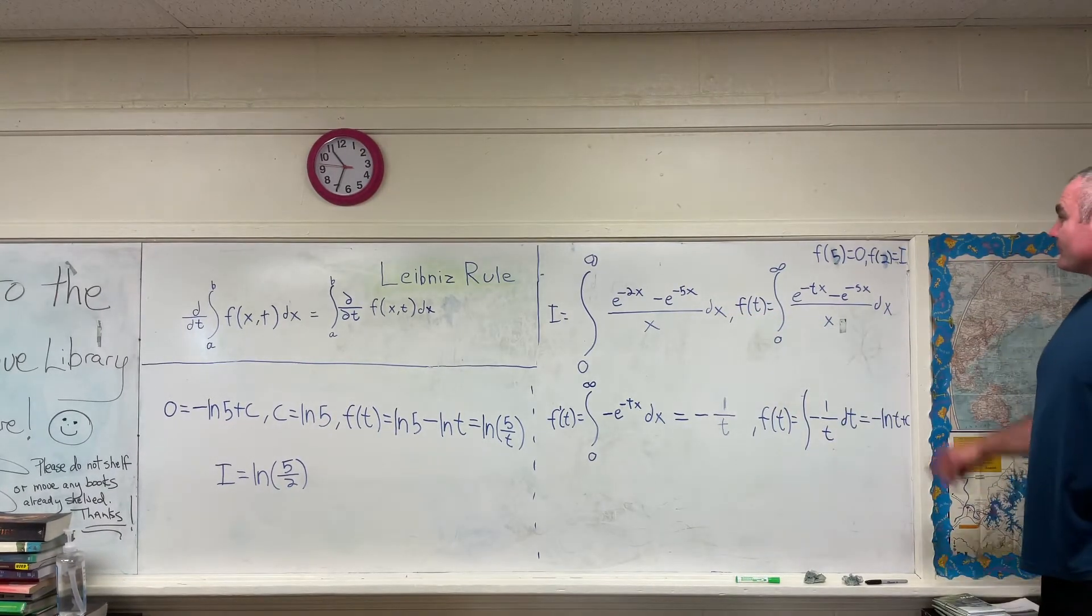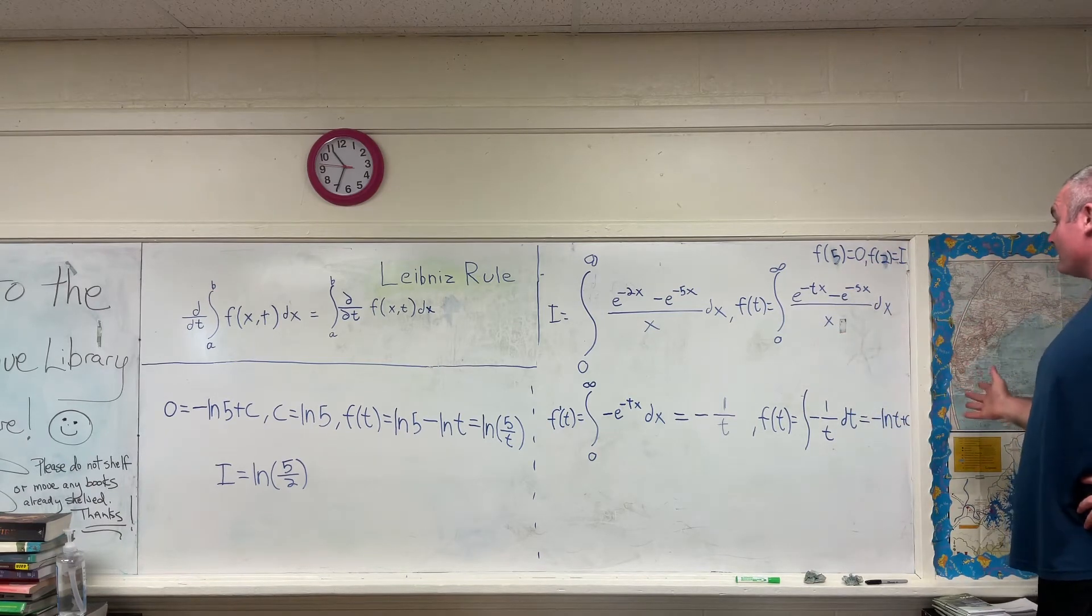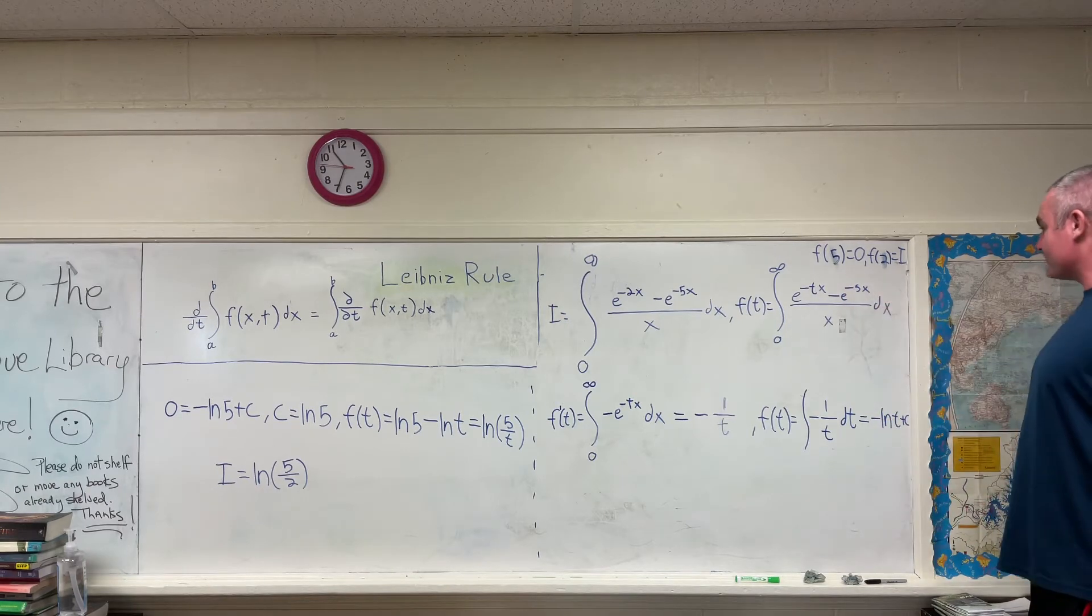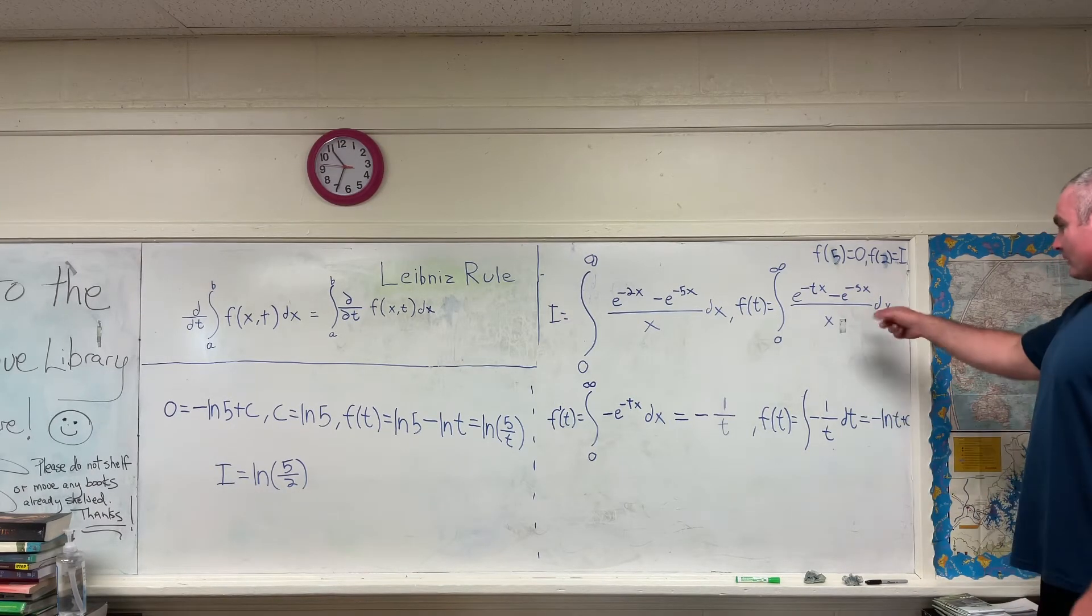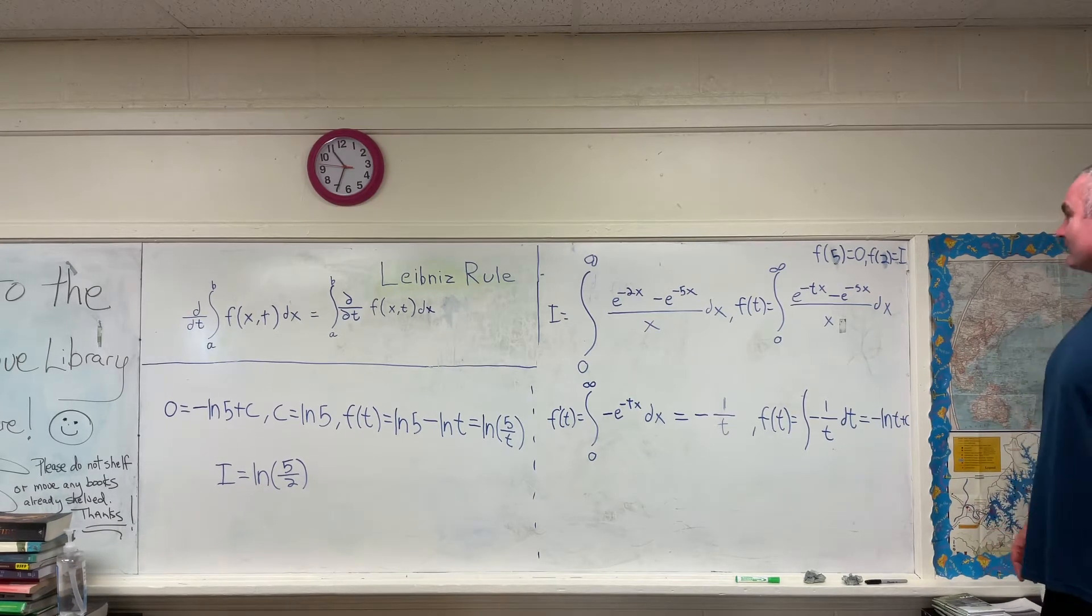Make a few notes here that if you evaluate our function of t at 5, you're going to get 0. Because you'll have e to the negative 5x minus e to the negative 5x, which is 0, over x, which is still 0, integrated from 0 to infinity, is still 0.